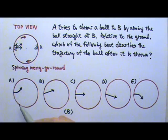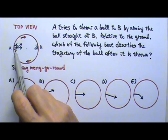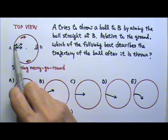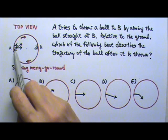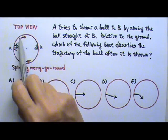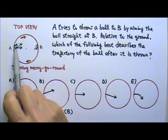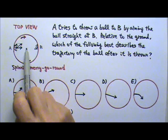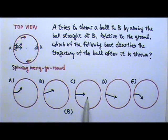Now what if we look at the trajectory of the ball as seen by A? Now A is spinning with the merry-go-round. But instead of seeing the ball going straight following this path,